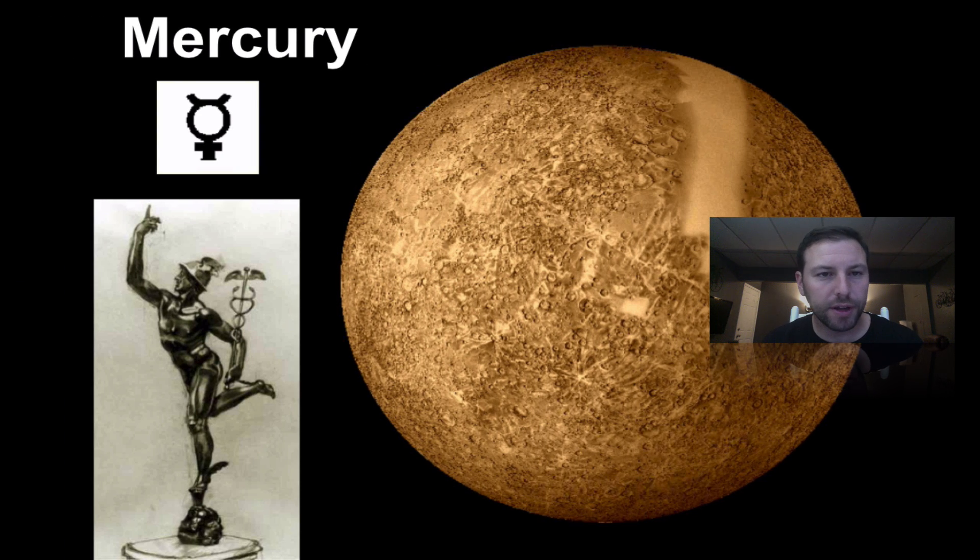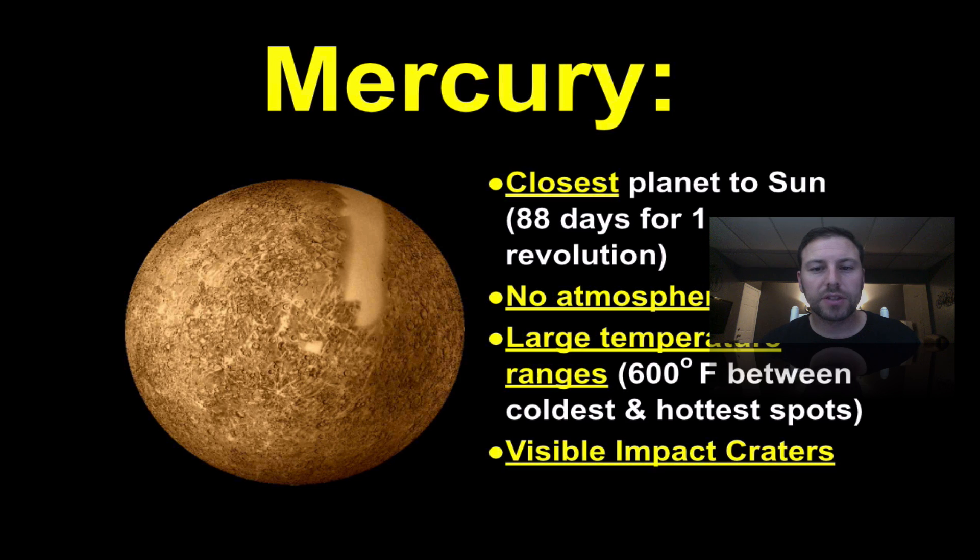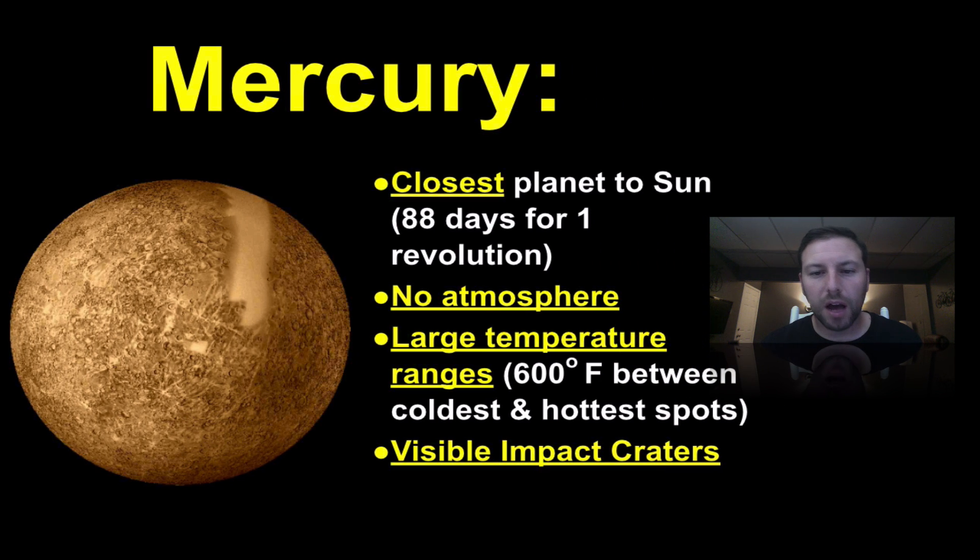So here's Mercury and you can see it's the closest planet to the sun. It's got 88 days for one revolution, no atmosphere, a huge temperature range of 600 degrees Fahrenheit between the hottest and coldest spots. It's a pretty big range and it has visible impact craters.